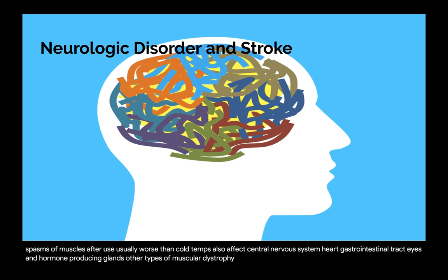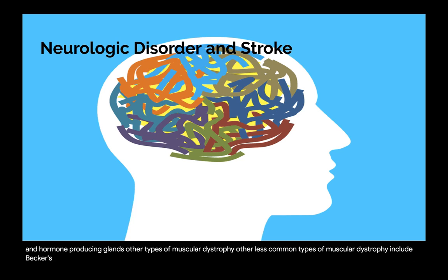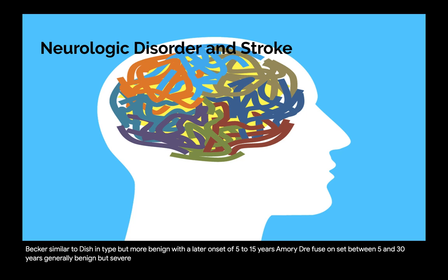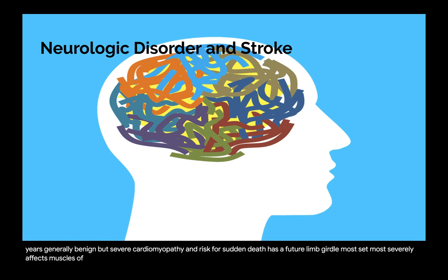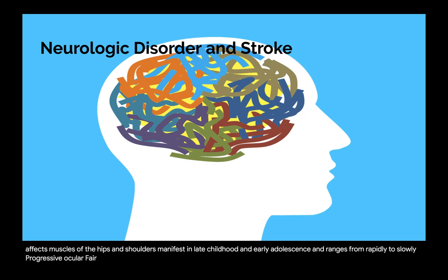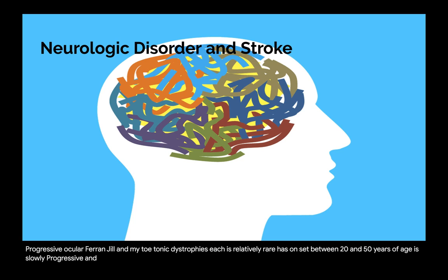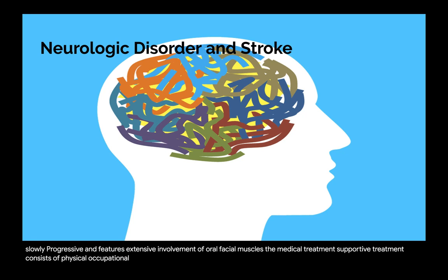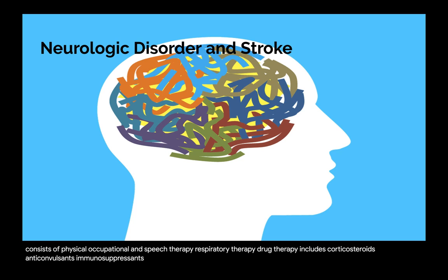Other less common types of muscular dystrophy include Becker (similar to Duchenne but more benign with later onset of 5 to 15 years), Emery-Dreifuss (onset between 5 and 30 years, generally benign but with severe cardiomyopathy and risk for sudden death), limb-girdle (most severely affects muscles of the hips and shoulders, ranging from rapidly to slowly progressive), and oculopharyngeal and myotonic dystrophies (each relatively rare, with onset between 20 and 50 years, slowly progressive, and featuring extensive involvement of oral-facial muscles). Medical treatment is supportive, including physical, occupational, and speech therapy, respiratory therapy, and drug therapy including corticosteroids, anticonvulsants, immunosuppressants, and antibiotics for respiratory infections. Preventive treatment consists of prenatal diagnosis, carrier detection, and genetic counseling.